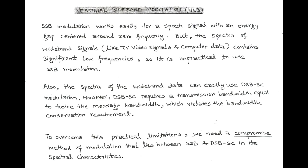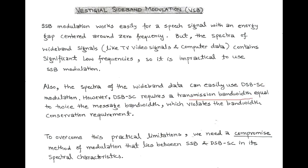But in the spectrum of wideband signals like TV video signals or computer data, there is significantly zero energy gap. So it is impractical to use SSB modulation for TV video signals or computer data. These wideband signals can use double sideband suppressed carrier modulation, but that requires a transmission bandwidth equal to twice the message bandwidth, which breaks the requirement of the bandwidth conservation scheme.